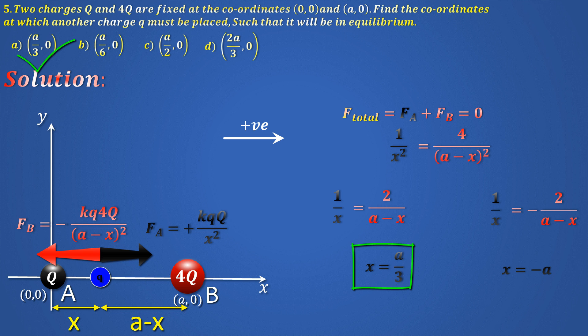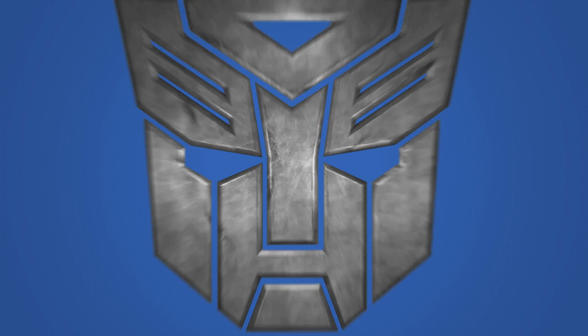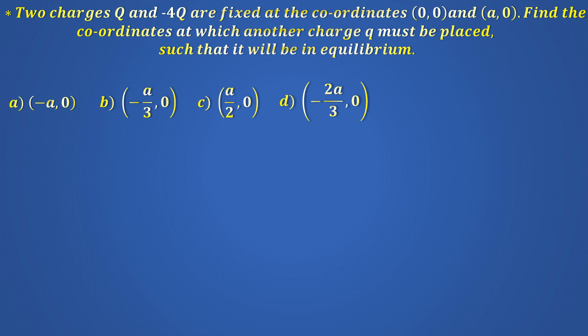Alright, now your turn. A similar problem but instead of 4Q, the given charge now is minus 4Q. The answer will definitely change. So, follow the same chain of thoughts as I did when I solved my problem and you should get the answer to this without much difficulty. So, the answer is minus A comma 0. Alright, one last conceptual problem.